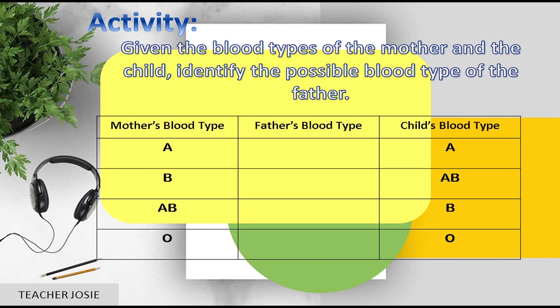Given the blood types of the mother and child, identify the possible blood type of the father. If the mother's blood type is A and the child's blood type is A, the father's blood type is A or O. If the mother's blood type is B and the child's blood type is AB, the father's blood type is A, B, AB, or O. If the mother's blood type is AB, the father can be A, B, AB, or O. If the mother's blood type is O and the child's blood type is O, the father's blood type is O.